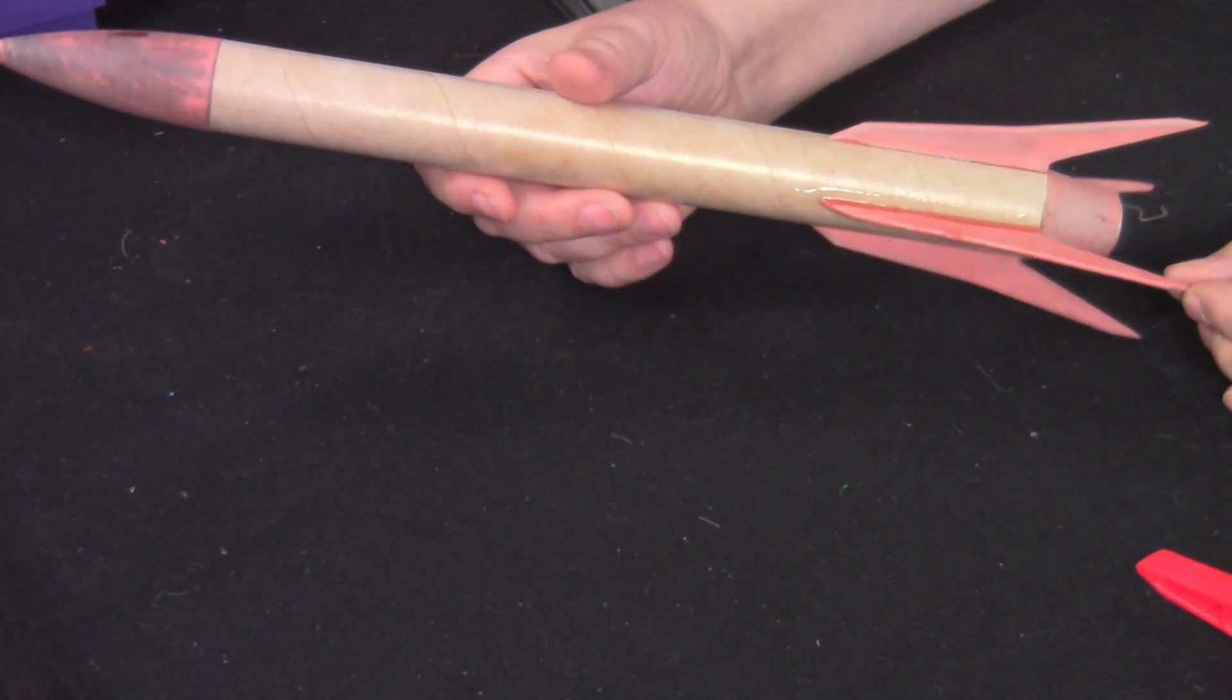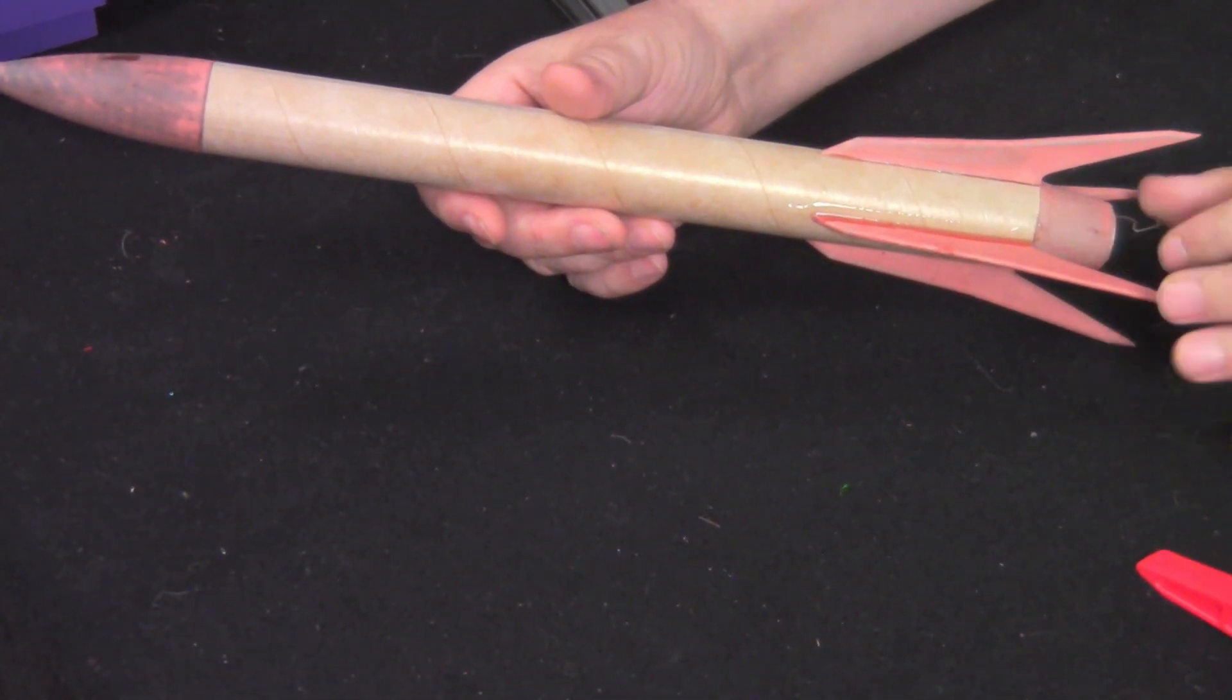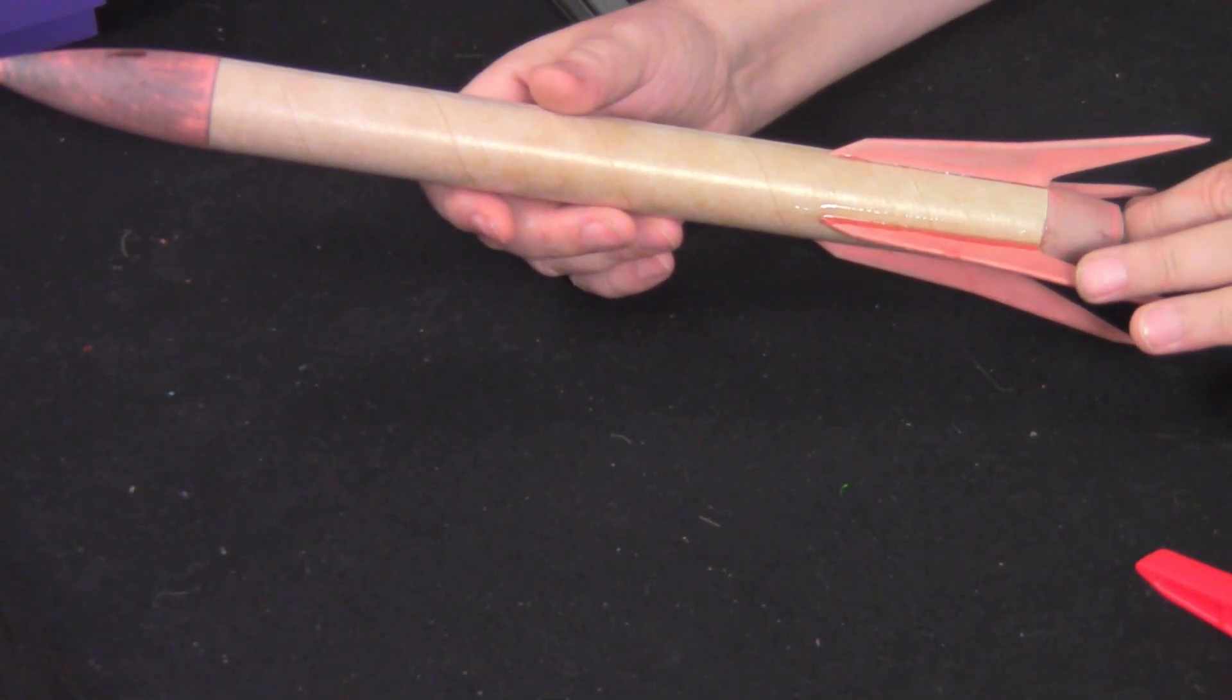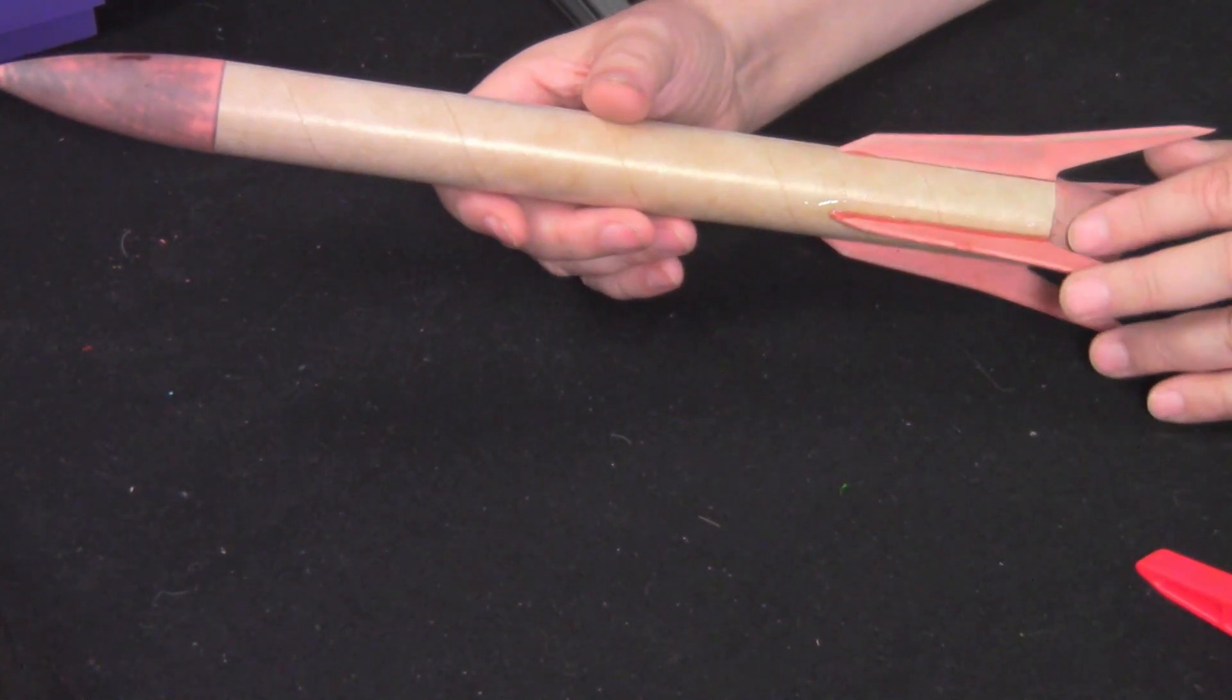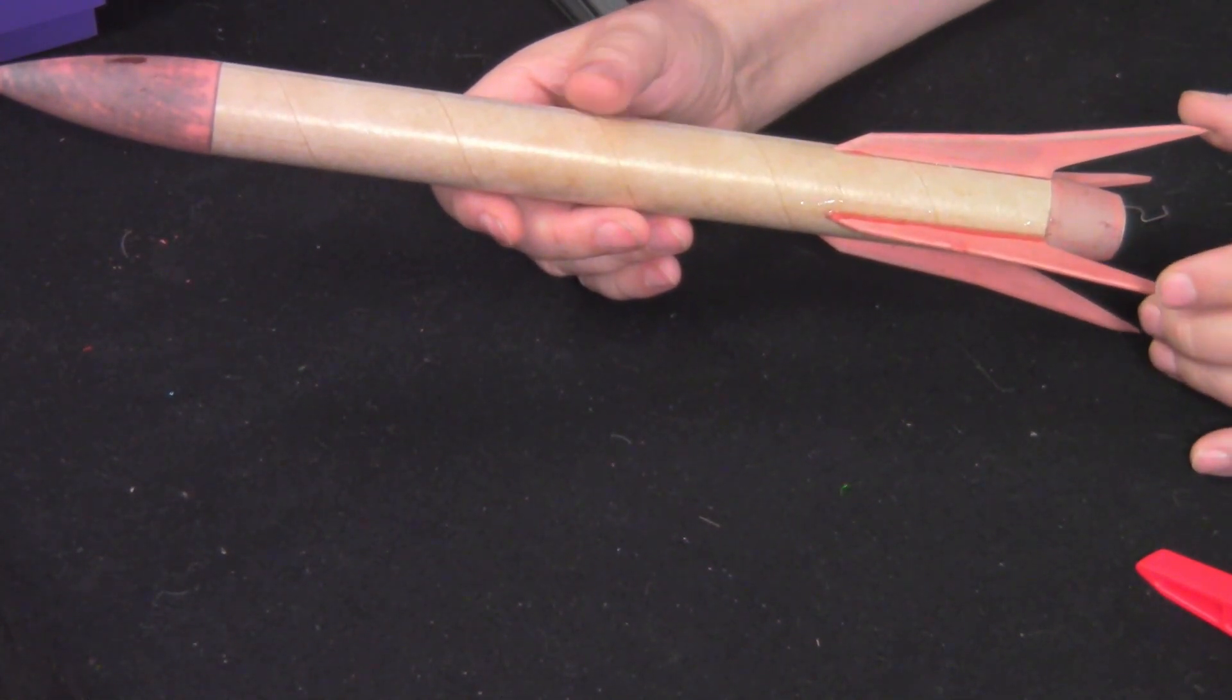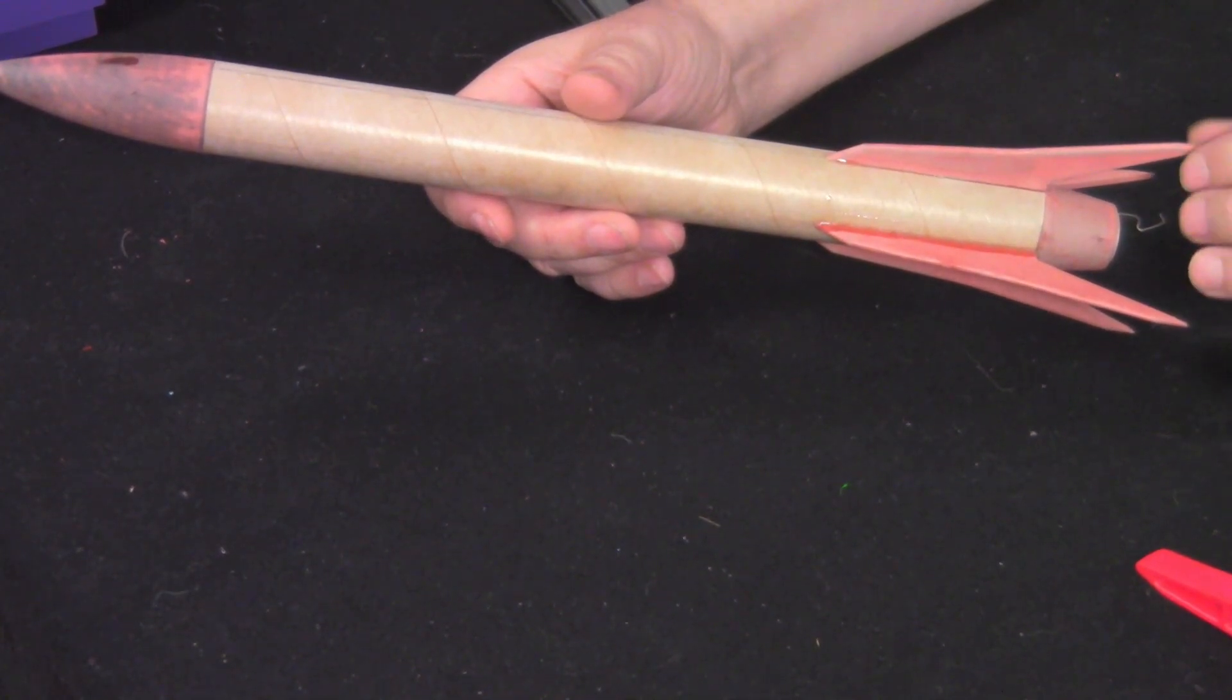We'll see what happens. That's part of the experimentation. So this is what I will refer to as a composite rocket. It has some 3D printed parts. It has some traditional parts. But we're going to try and fly this anyway and see how it works.